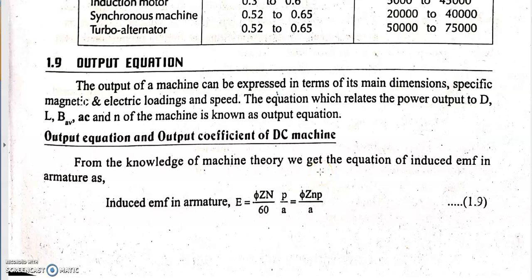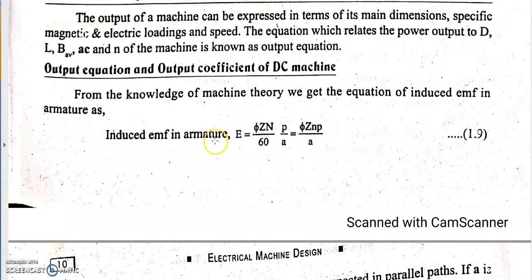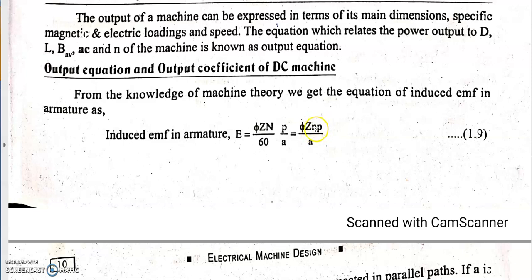The output equation of a DC machine is derived from the fundamental EMF equation. The EMF equation is E = φZN/60 × P/A, which can also be written as E = φZn × P/A, where N is speed in RPM and n is speed in RPS. That is the difference between these two forms of the equation.